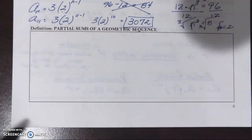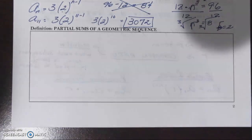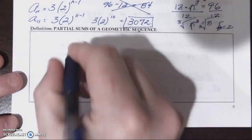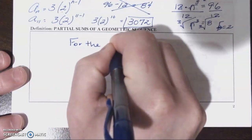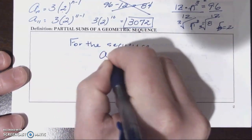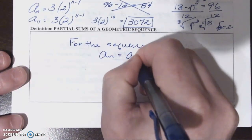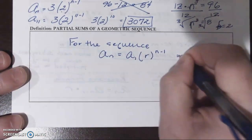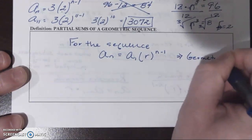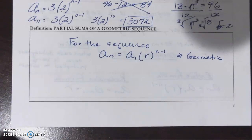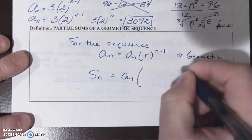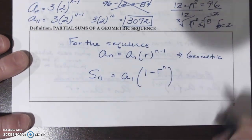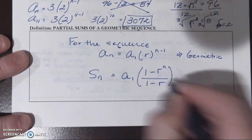We'll continue on with part two of our geometric sequences video with the partial sums formula of a geometric sequence. For the sequence where the nth term is the first term times the common ratio to the n minus 1 power, the sum of the nth term would be the first term times 1 minus the common ratio to the nth power over 1 minus the common ratio.